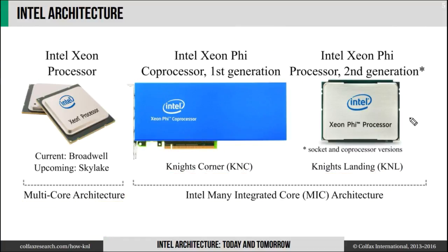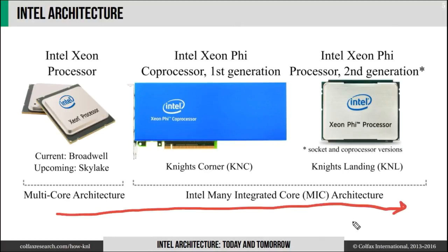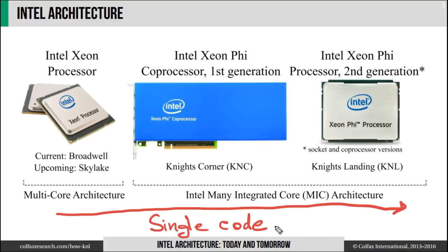Even though the MIC architecture is specialized, it doesn't mean that you have to run specialized software on it. The idea behind the MIC architecture is that you have a single code base. If this code is developed with modern code practices, it will run effectively on general purpose Xeon processors, or Core or Pentium processors, and after recompilation, this code will also run effectively on the MIC architecture.